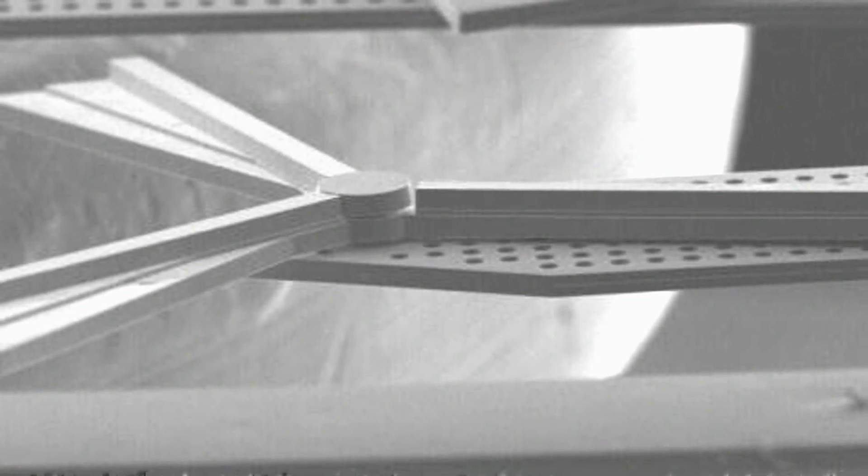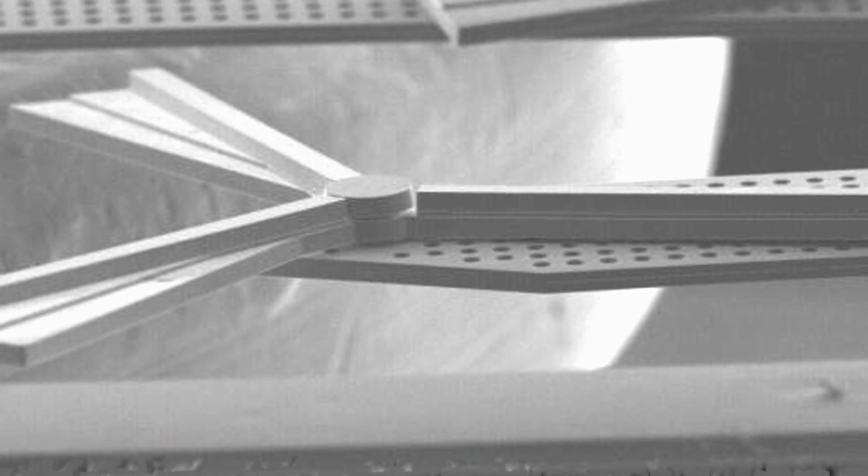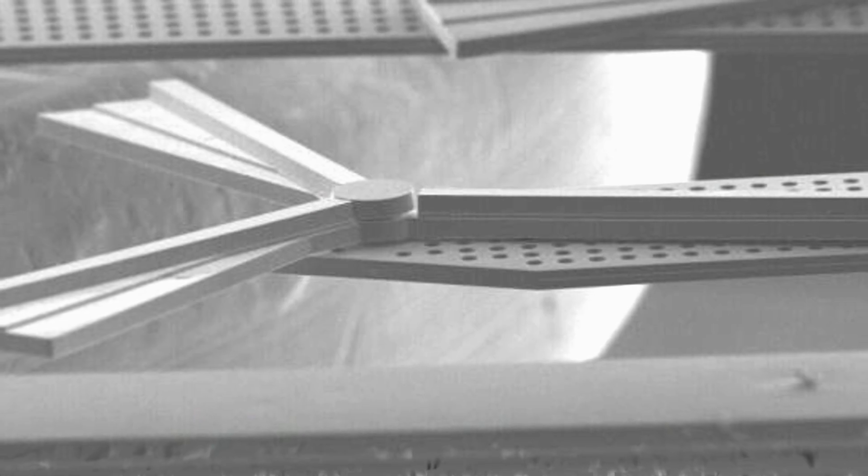The micro windmills can be inexpensively mass-produced, and Professor Chow believes they could be used not only to charge cell phone batteries, but installed in much larger numbers on the walls of buildings to harvest energy that could then be used for lighting, communications, or pretty much anything else you might need electricity for.